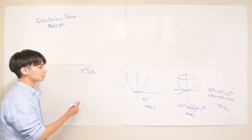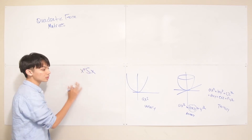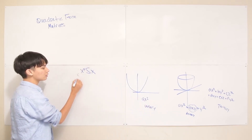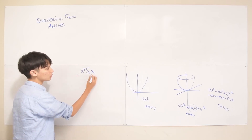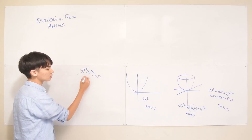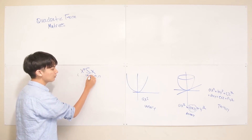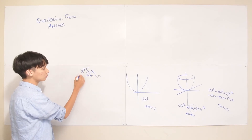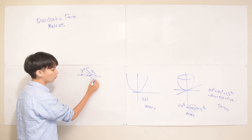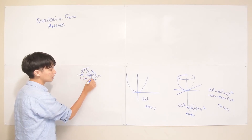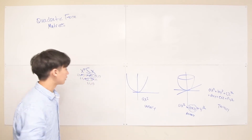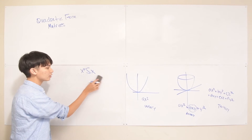First, to convince you that this actually does evaluate into a scalar or a polynomial: x is going to have dimensions m by 1, S is symmetric so it's square — m by m — and x transpose is going to be 1 by m. So these dimensions combine to give something that's 1 by 1. This does evaluate into a scalar.